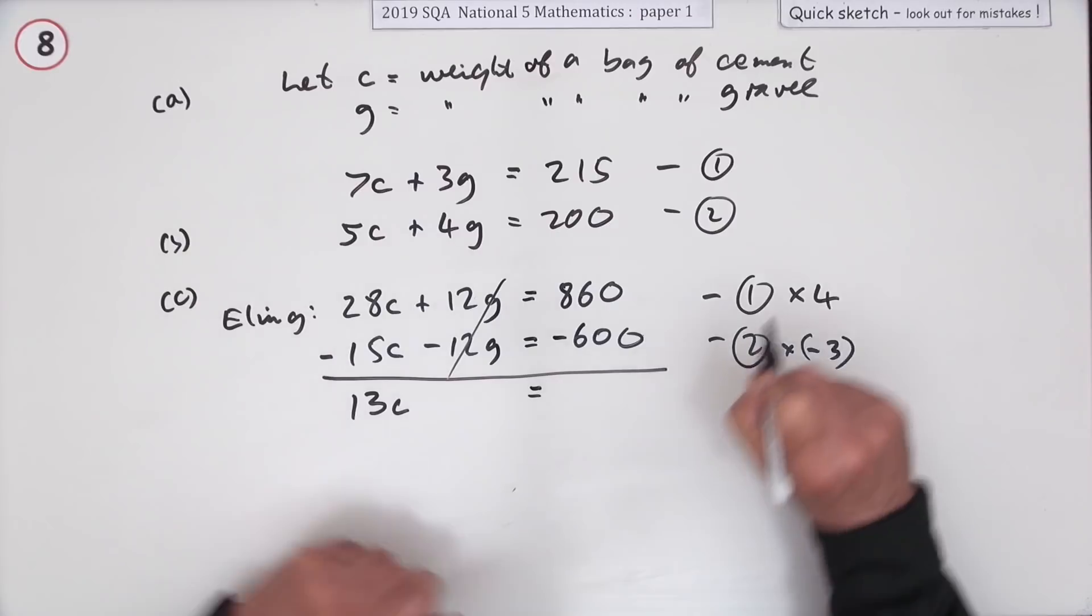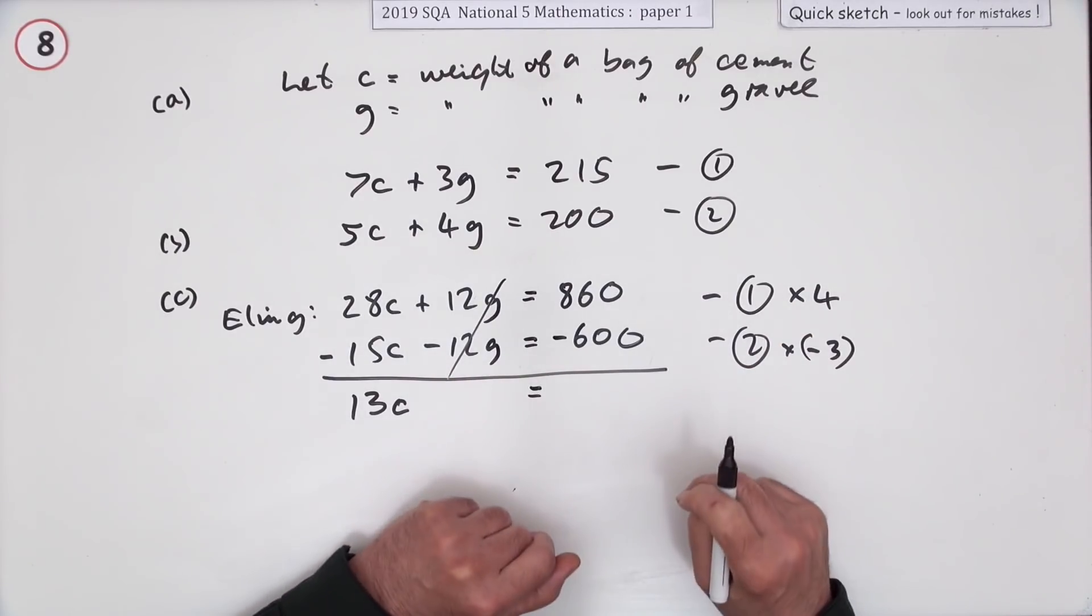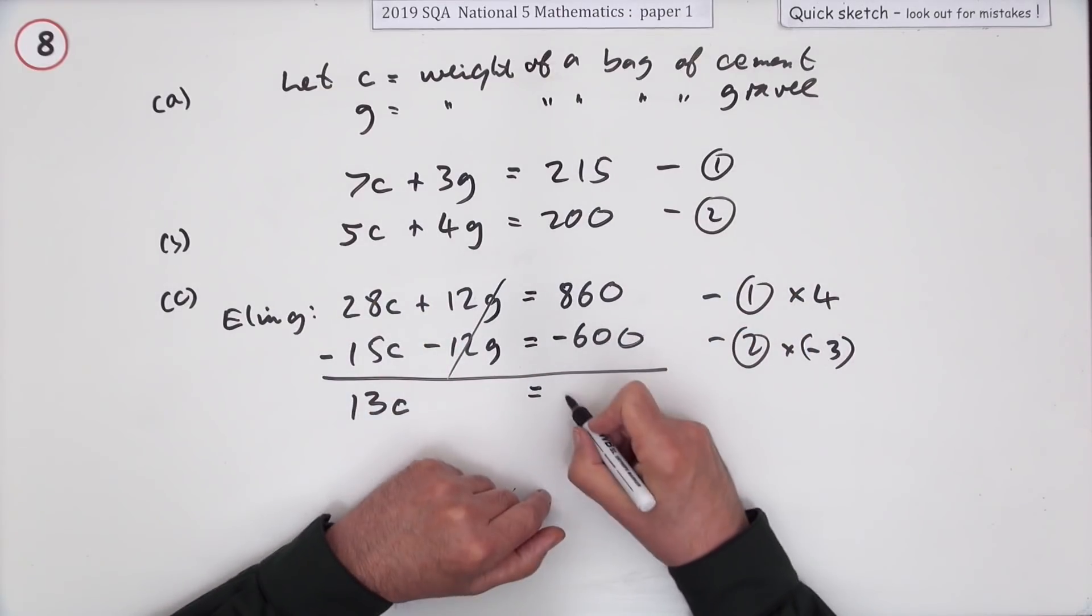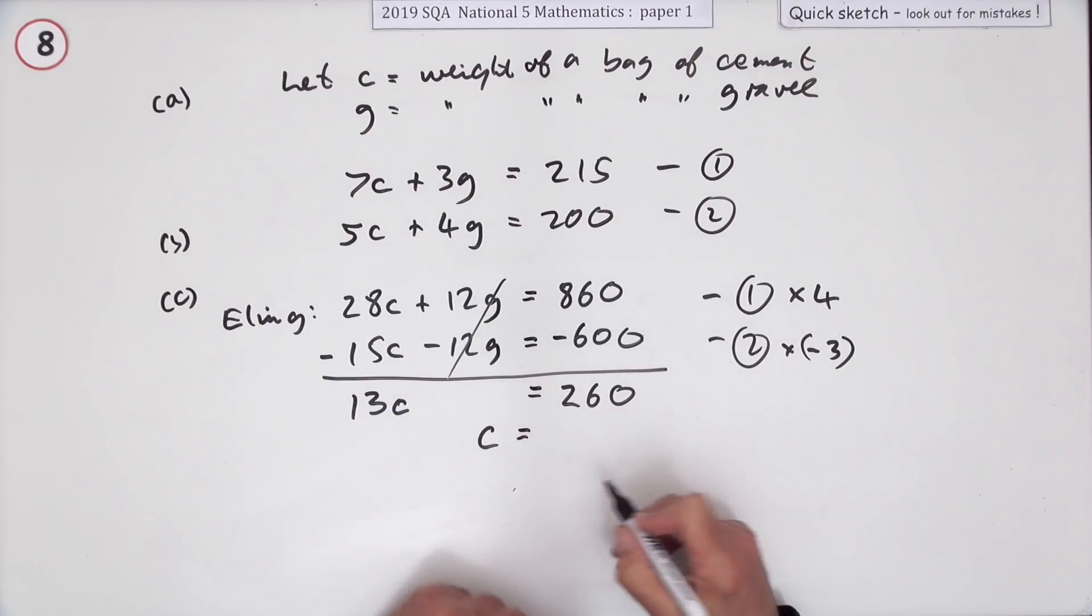I'm going to get 13. 13 is a wee scary number because there's not a lot 13 will go into, so you're hoping this will divide by 13. Subtracting gives me 260. Look, that's double it, isn't it? 260 over 13, so C is going to be 2 times 20.